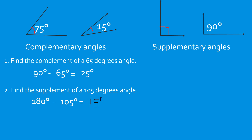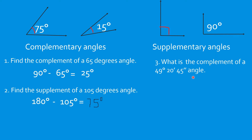Here's another question: what is the complement of a 49 degrees, 20 minutes, 45 seconds angle? Maybe you're encountering this for the first time. This format is usually seen with coordinates or locations given in DMS — degree, minutes, and seconds.